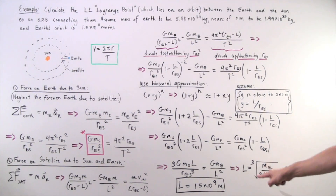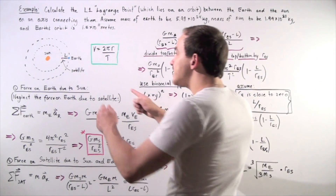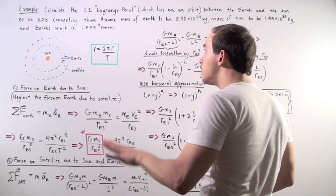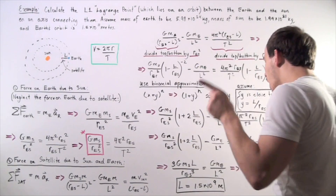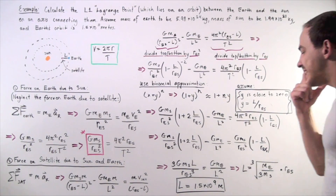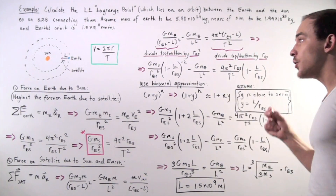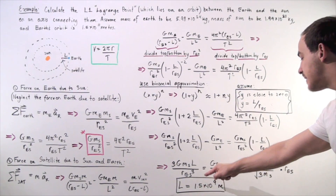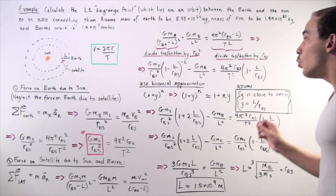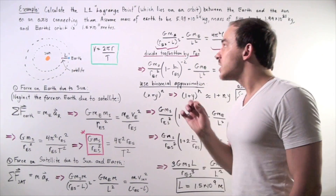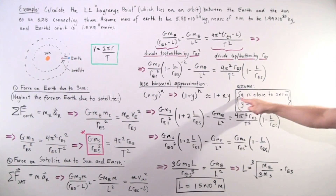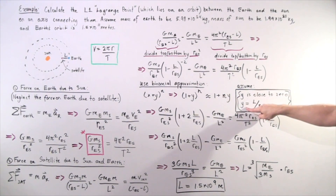So this L, if we plug in all our values, gives us the distance from the Earth to the satellite — the distance from the Earth to Lagrange point L1. We plug in our values and find that this distance is 1.5 times 10 to the 9 meters, which is a very small number compared to the radius of the Earth's orbit. So our assumption that y is very close to zero was in fact correct.